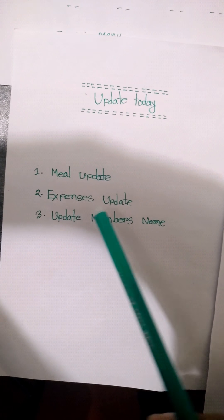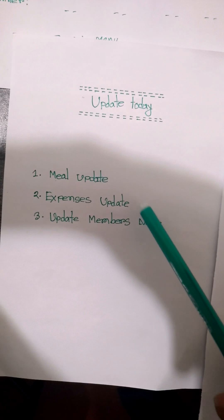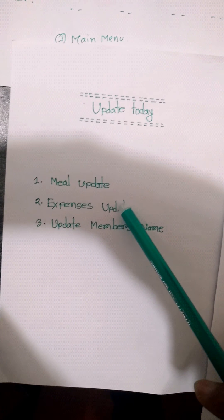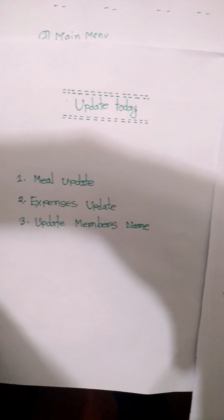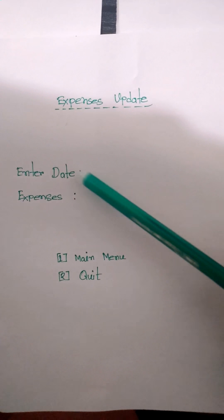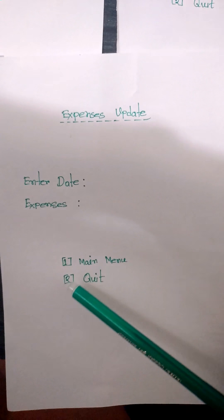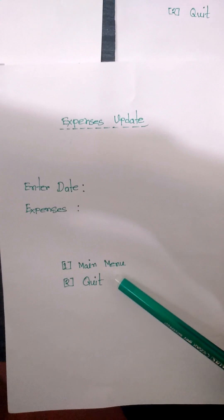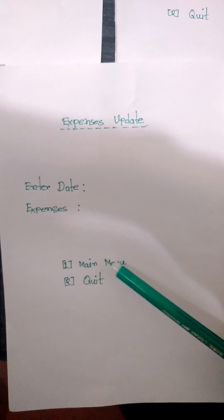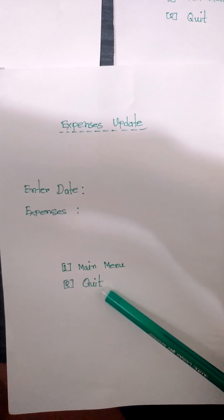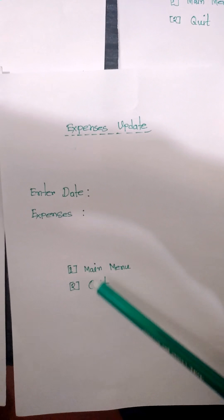Then we select option two: expense update. If we press two, then we go to the expense update page. Here we see fields for enter date and expenses. Above, we also see main menu and back options. If we press on, then we again go back to the update today page.